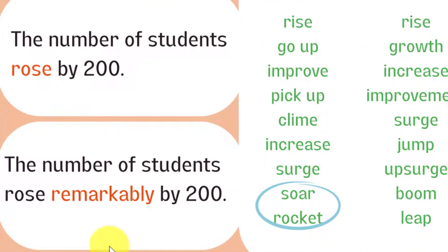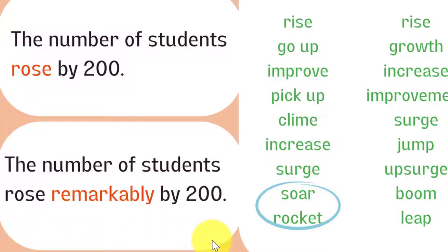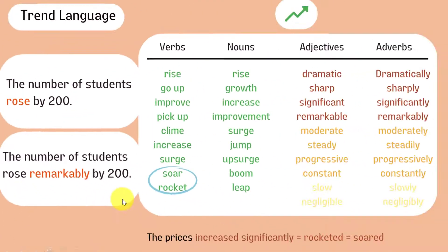Compare these two sentences: 'The number of students rose by 200.' 'The number of students rose remarkably by 200.' The second sentence adds detail about the degree of change. Adverbs and adjectives have been separated according to their degree of change – high, medium and low. Using adjectives and adverbs in task 1 gives your writing vitality.